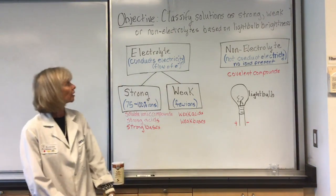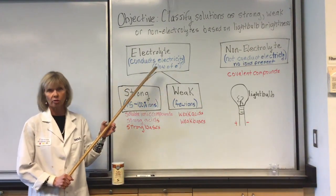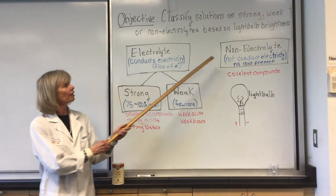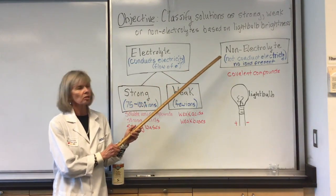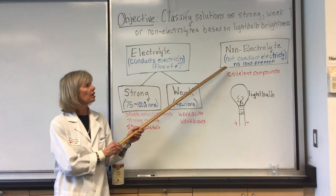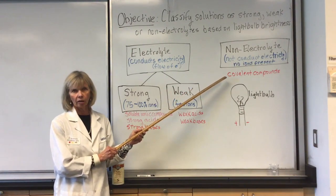An electrolyte is an aqueous solution that will conduct electricity. Electricity is the flow of electrons. A non-electrolyte is an aqueous solution that does not conduct electricity because there are no ions present. An example would be a covalent compound.